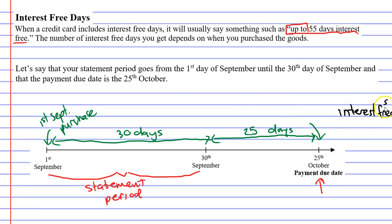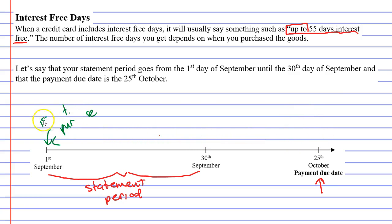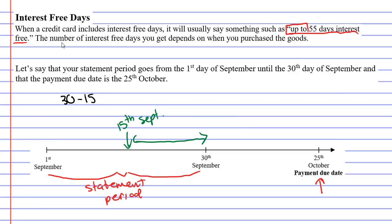Now let's look at a scenario where you don't buy it at the beginning of the statement period. Let's say we purchase something right in the middle of the statement period — the 15th of September. How many days are there from the 15th to the 30th? You can calculate 30 minus 15, but you also need to add 1 because we're including the day of the 15th in the count. This comes out to 16.